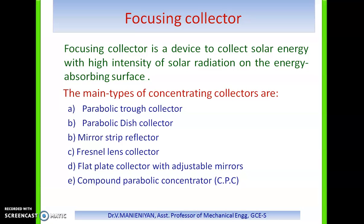A focusing collector is a device to collect solar energy with high intensity of solar radiation on the energy absorbing surface. Such collectors generally have an optical system in the form of reflectors. A focusing collector is a special form of flat plate collector modified by introducing a reflecting surface between the solar radiation and the absorber. In these collectors, radiation falls on a relatively larger area and is focused on a considerably small area. As a result, the energy concentration allows fluids to be heated up to 500 degrees or more.